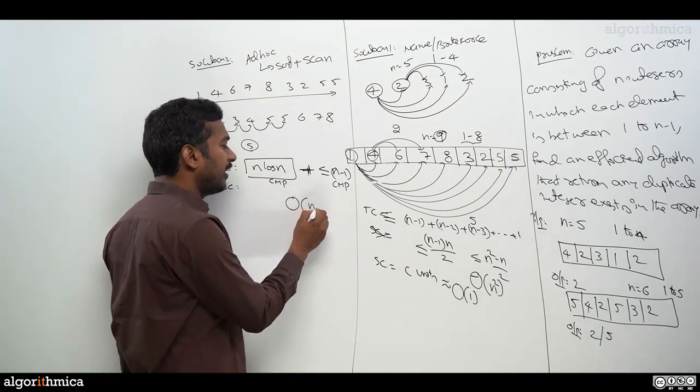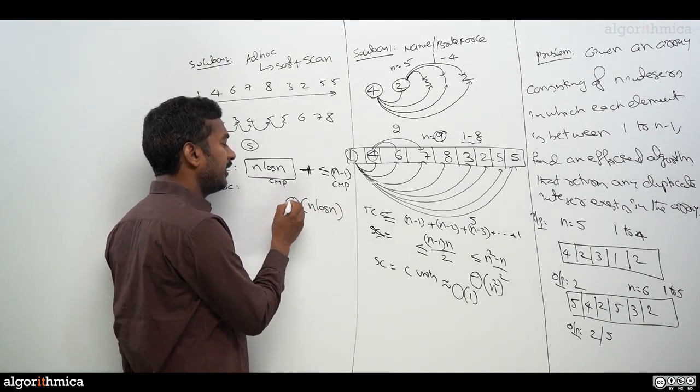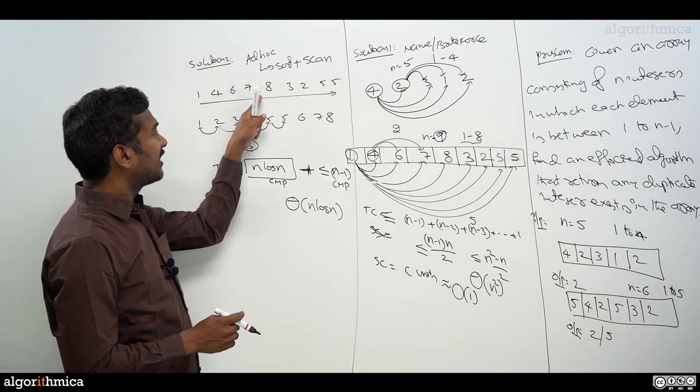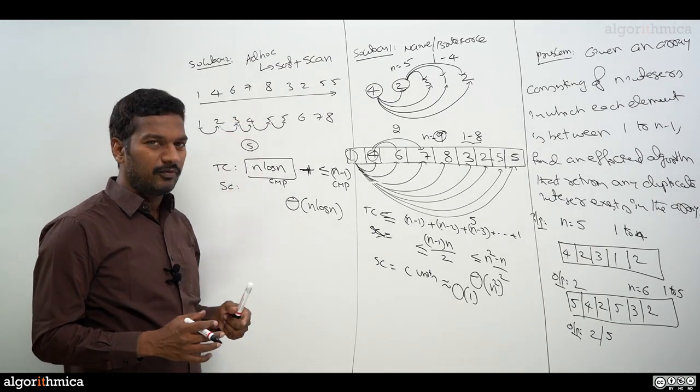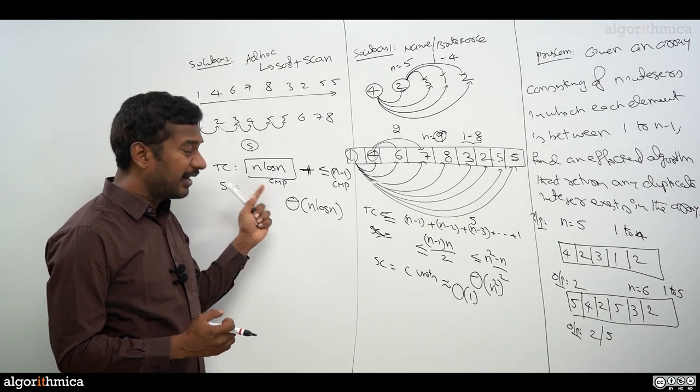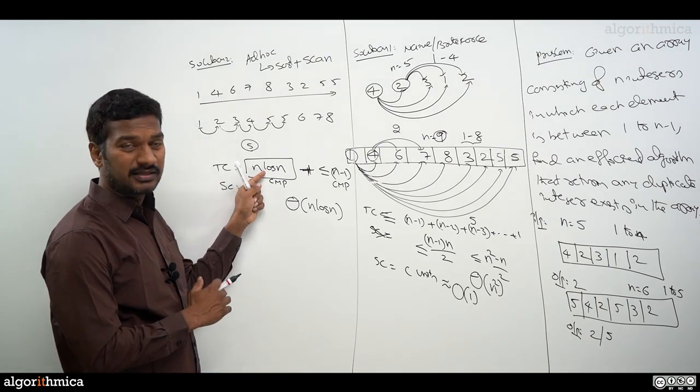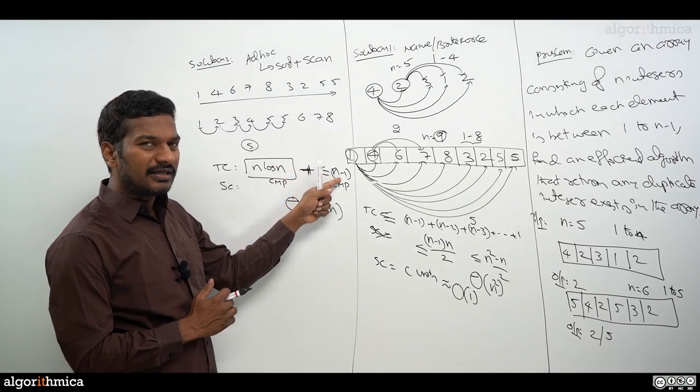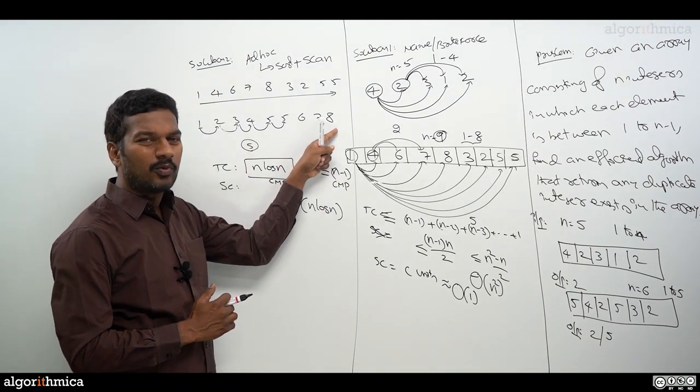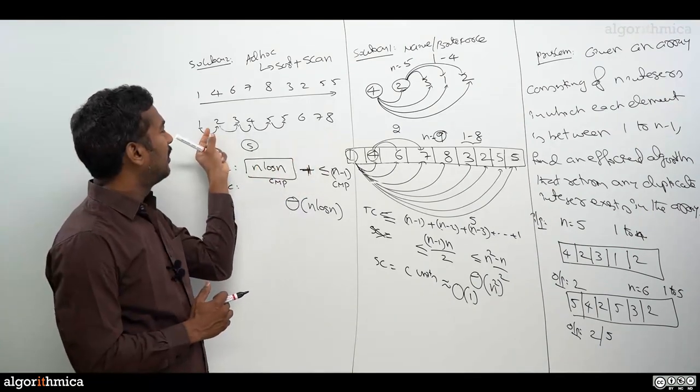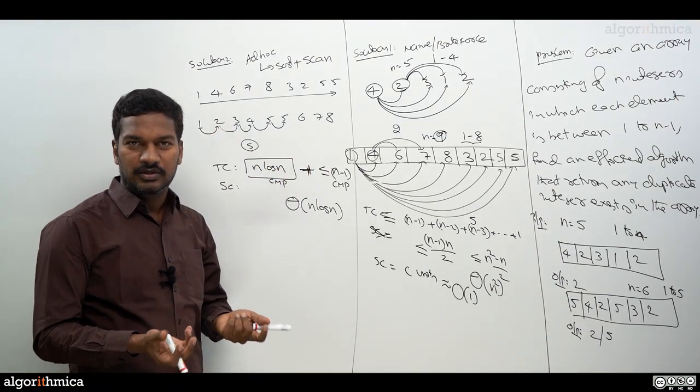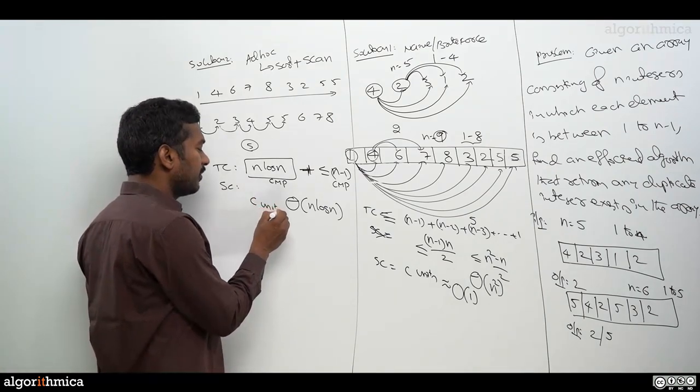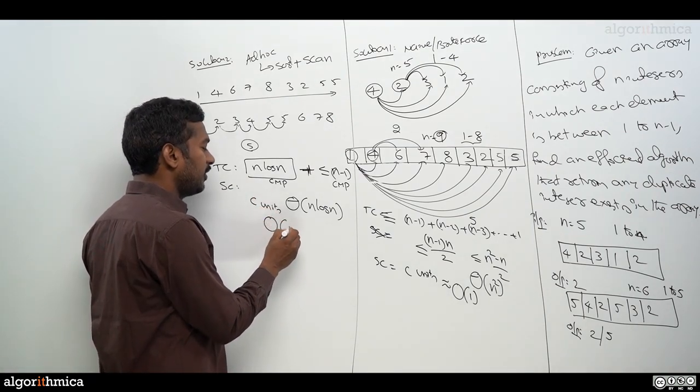We can also write this as theta of n log n. Space complexity: sorting can be done without extra space, and for adjacent checks we need just one scan with constant variables. That's why we write it as big O of one.